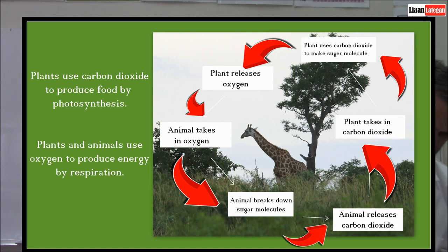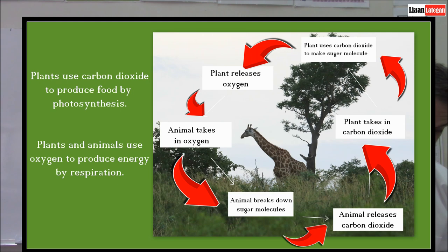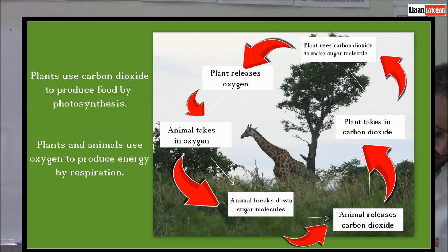In photosynthesis, carbon dioxide is required by the cells to produce food. In respiration, carbon dioxide is given off as a by-product. In photosynthesis, oxygen is given off as a by-product. In respiration, oxygen is used to produce energy. So plants use carbon dioxide to produce food by photosynthesis, and plants and animals use oxygen to produce energy by respiration.